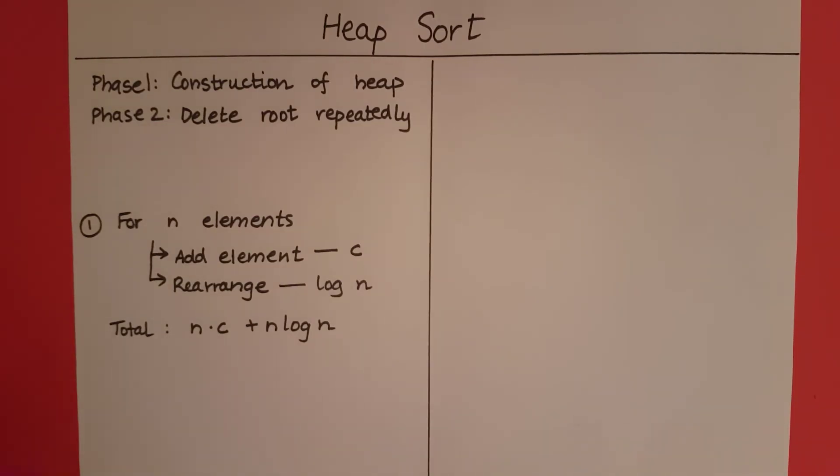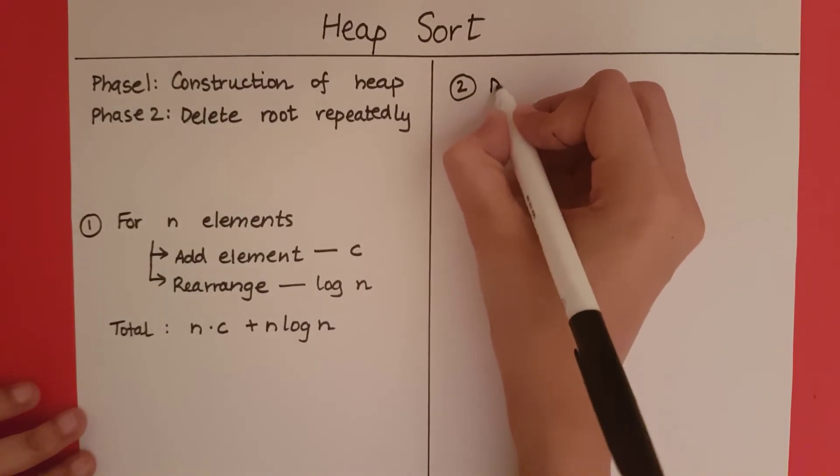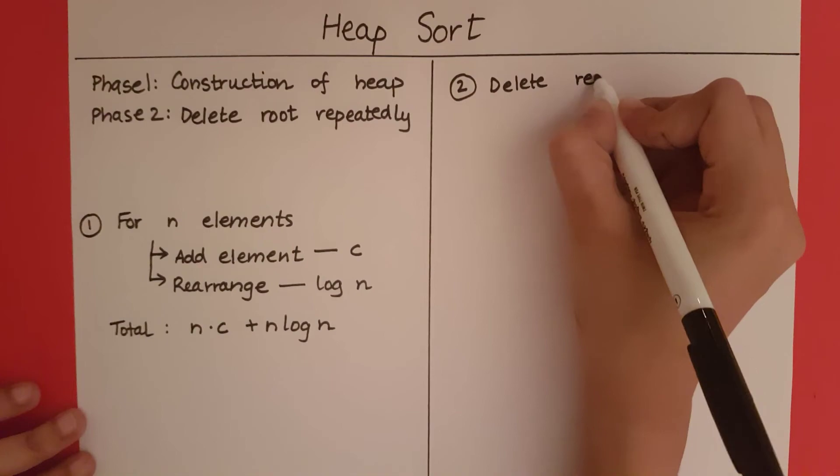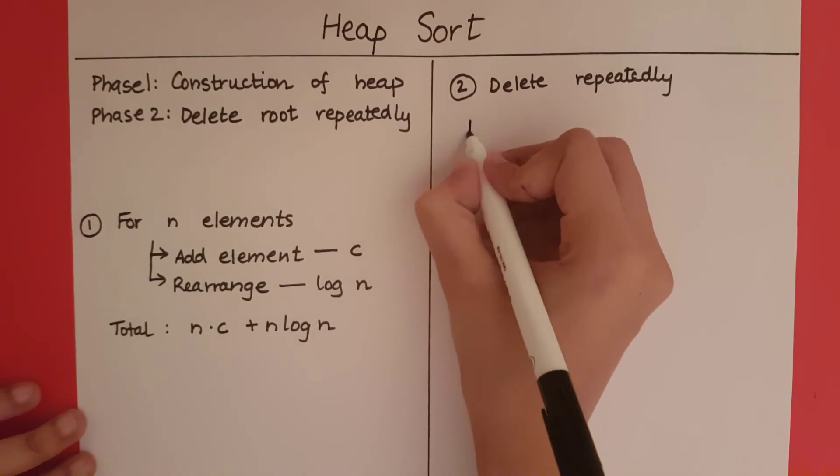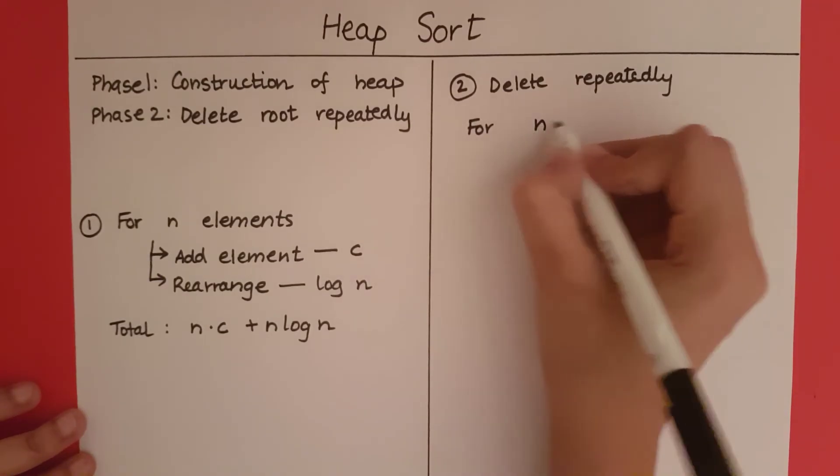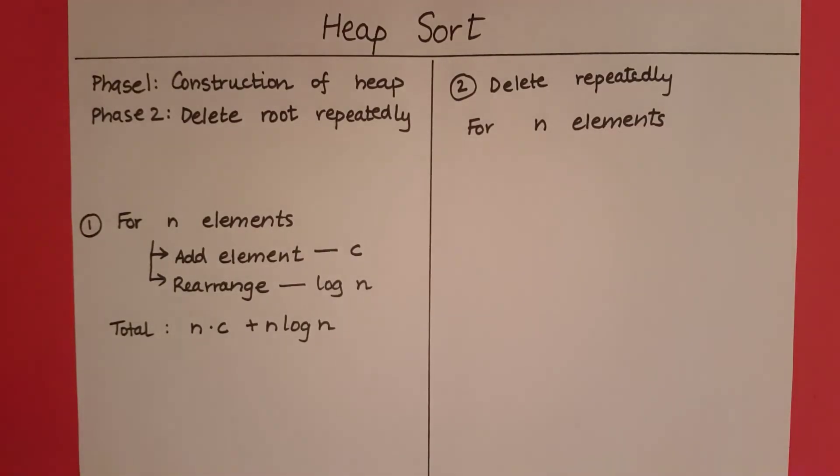Now let's look at the next phase. The next phase is delete repeatedly, which means for n elements. Why am I saying for n elements? Because each of the n elements are going to become the root eventually. One by one, if we keep deleting the root, different elements keep replacing the root and we keep deleting that. So all the elements are going to become the root at some point and we will delete it.